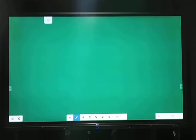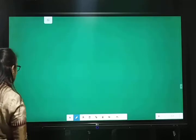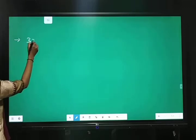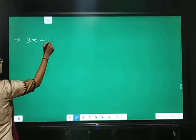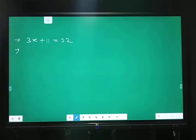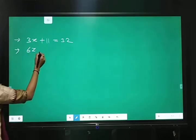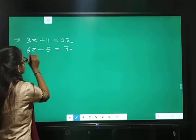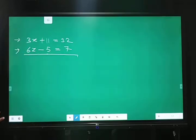Write the statement in the form of equation. Aakke paas ager statement hai toh usko equation mein kaisi change karenge. Toh first is the sum of 3 times x and 11 is 32. The sum of 3 times of x. It means 3x and 11. Means plus 11 gives 32. Next is if you subtracted 5 from 6 times a number. If you subtracted 5 from 6 of a number. So, 6z minus 5 you give 7. So, equation is 6z minus 5 equal 7. Clear, clear students?